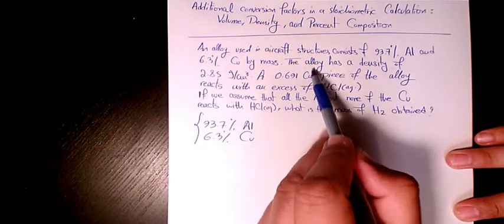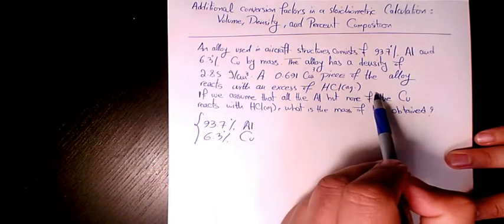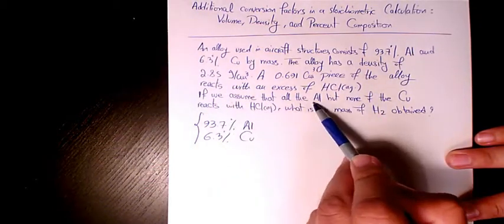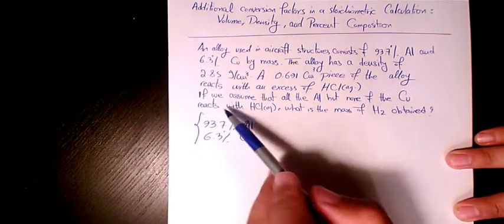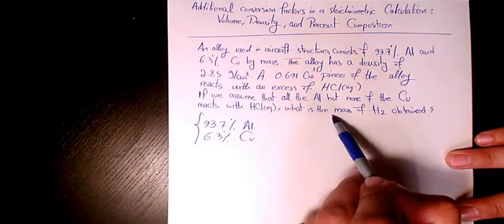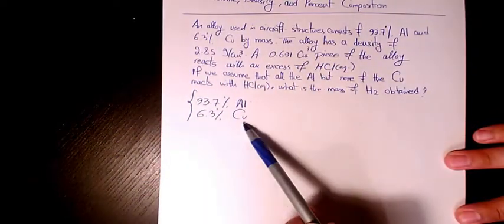A 0.691 cubic centimeter piece of alloy reacts with an excess of HCl. If we assume that all the aluminum but none of the copper reacts with HCl, what is the mass of H2 obtained?